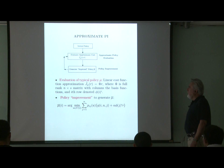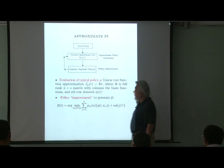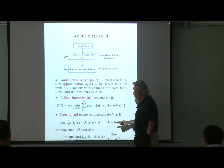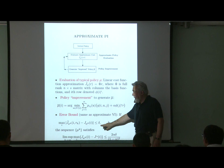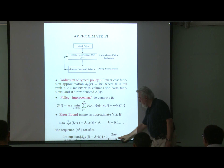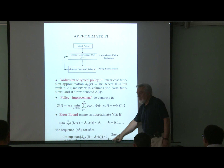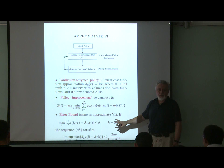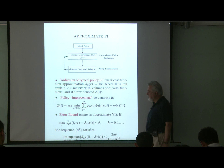We want to focus on how to deal with approximate policy evaluation. If the policy evaluation is approximate to within delta, there is an error bound saying that successive policies come within a certain expression of the optimum. Notably, this is exactly the same error bound as approximate value iteration — approximate value iteration and approximate policy iteration give you the same error bound, even though they are different methods.